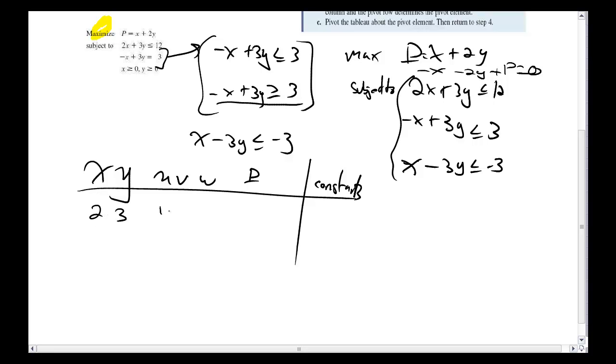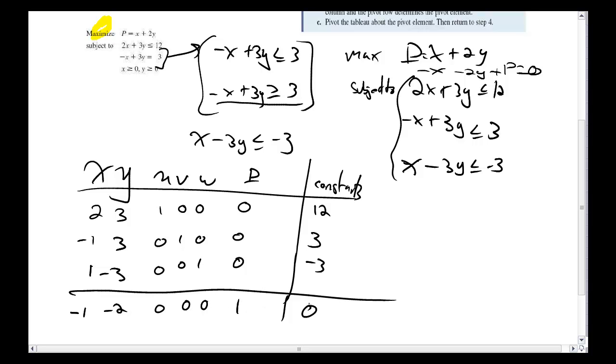Remember, p I'm going to solve over. So I'm going to have minus x minus 2y plus p equals 0. So what am I going to get here? 2, 3, 1, 0, 0, 0, 12. Minus 1, 3, 0, 1, 0, 0, 3. And 1, minus 3, 0, 0, 1, 0, negative 3. And then my objective function here on the bottom being minus 1, minus 2, 0, 0, 0, 1, 0.